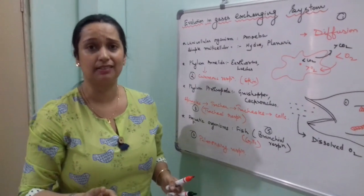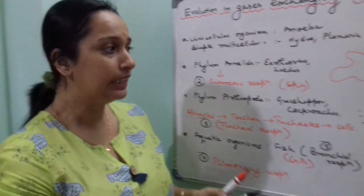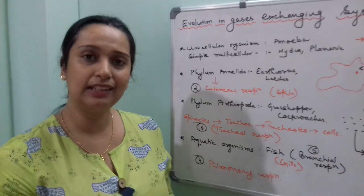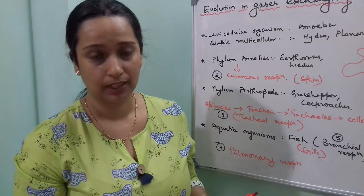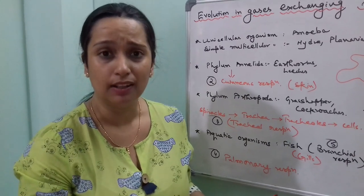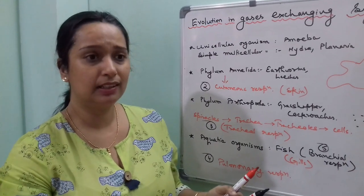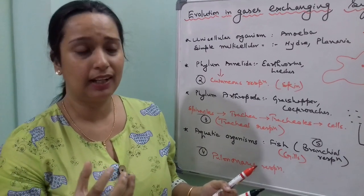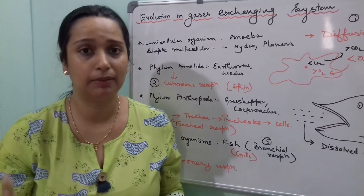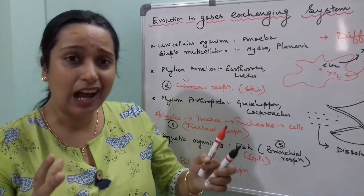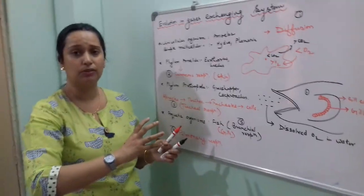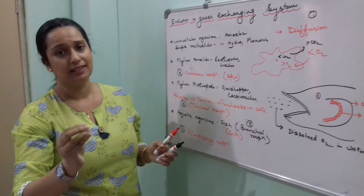The factors responsible for different respiratory structures in different organisms are: the habitat in which the organism lives, the availability of water, their body size — some organisms are very small, some quite large — and the type of circulatory system, whether they have an open or closed circulatory system, which will be studied in the circulation chapter. These are the factors responsible for the different organisms having different respiratory structures.